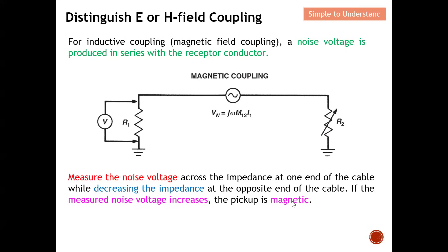Because the components are connected in series, when we decrease the impedance at the opposite end, the voltage drop across that end reduces, so the measured voltage at our end increases. Therefore, when we observe an increase in measured noise voltage after reducing the opposite-end impedance, we can confirm this is magnetic field coupling.